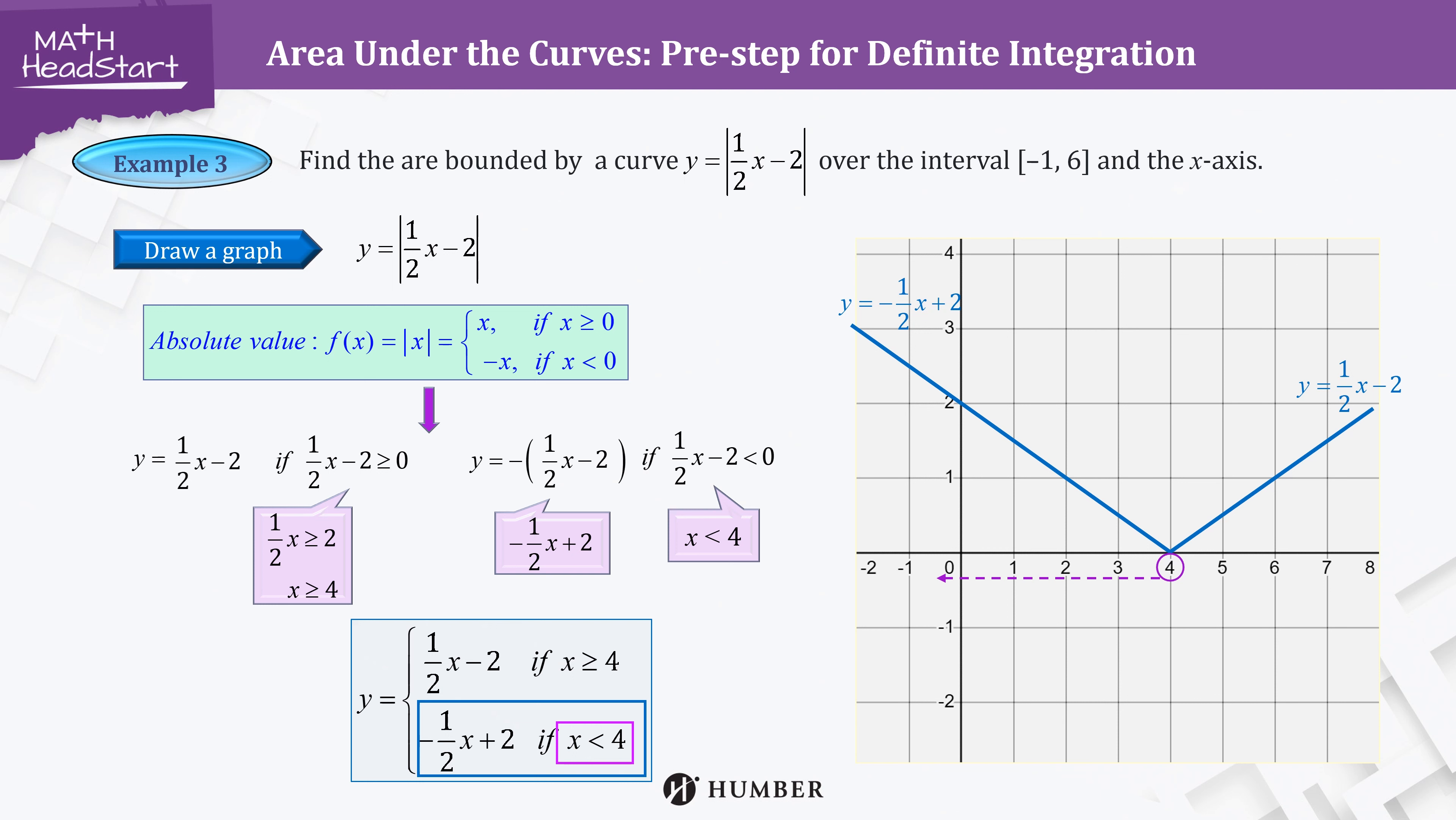Since we need to find the area from x = -1 to 6, the region bounded by the graph, the two lines, and the horizontal axis are two triangles as shown.